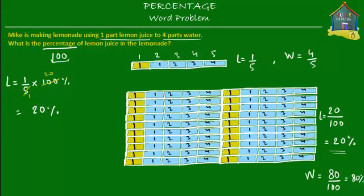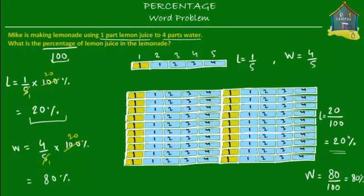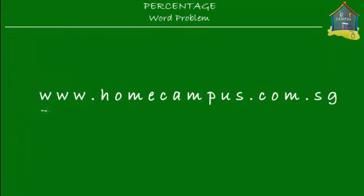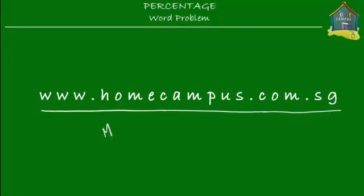Water would be four out of five parts. Multiply by one hundred percent: divide by five to get twenty, then four times twenty equals eighty — so eighty percent water. There are also other methods to convert a fraction to a percentage that we learned in previous lessons. The answer is the same: twenty percent lemon juice and eighty percent water. Visit www.homecampus.com.sg to find problems and practice. Bye!